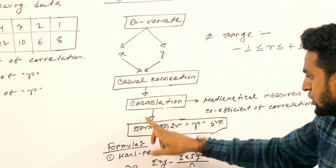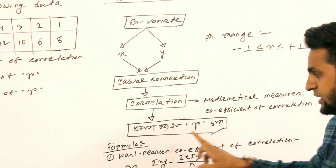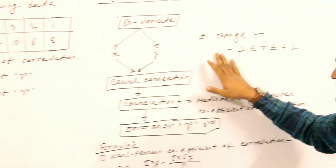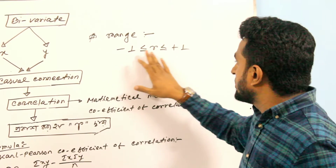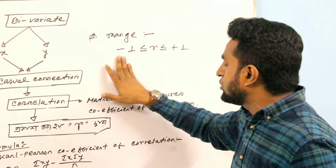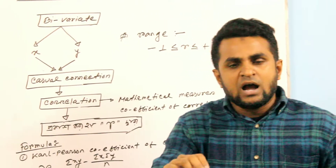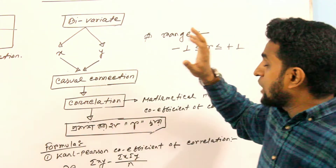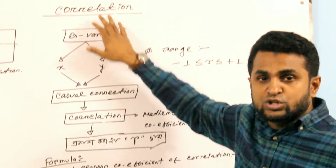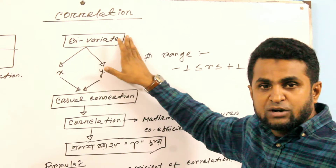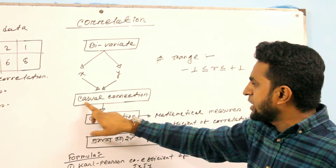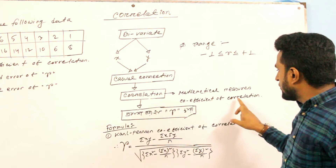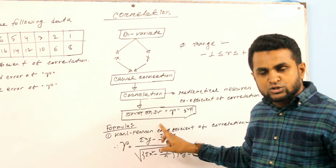What is the correlation? The coefficient of correlation measures the relationship between X and Y. What can back up causal relationships? The coefficient of correlation is the same. R is the range, and R lies between minus one and plus one.